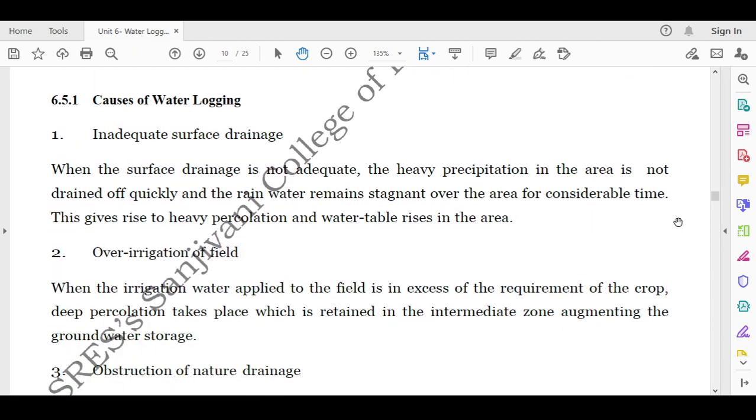Then what are the causes of water logging? There are a number of causes of water logging, out of which we will discuss a few like inadequate surface drainage. If drainage is not proper, then eventually there will be water logging. When the surface drainage is not adequate, the heavy precipitation in the area is not drained off quickly and the rainwater remains stagnant over the area for considerable time. This gives rise to heavy percolation and water table rises in that area, which increases water logging phenomena.